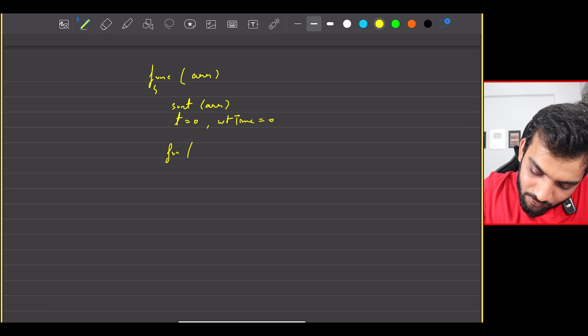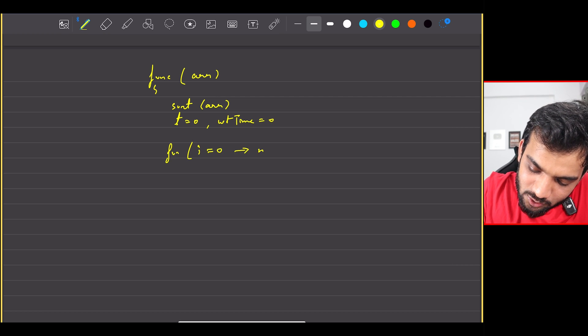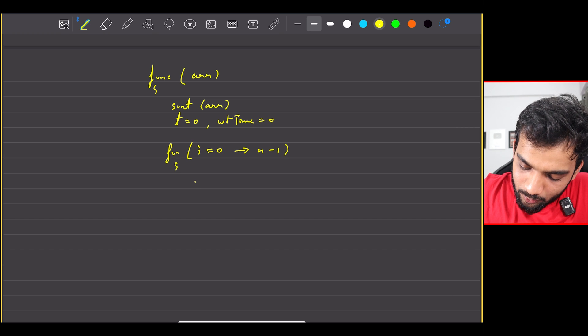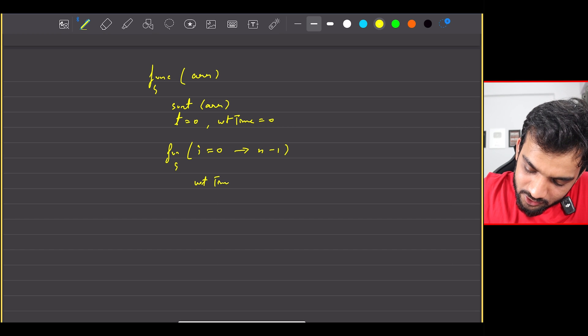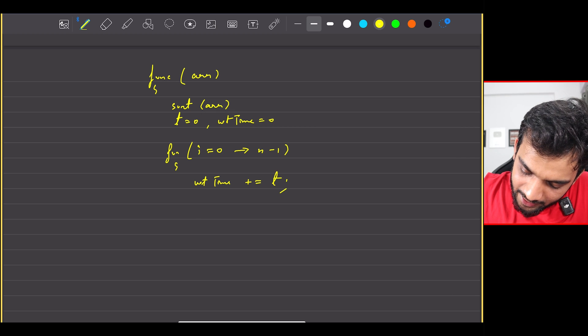You can keep the timer as 0, you can keep the wait timer as 0 itself, and then you can start iterating from 0 till n minus 1.